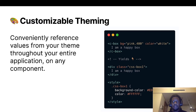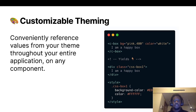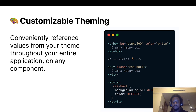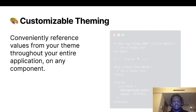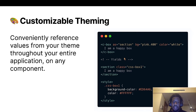Chakra UI also has a customizable theme with a really interesting theming API. It allows you to conveniently reference values from your theme object to style your components. On the right hand side, you can see a box component with a background color of pink 400 and a color of white, yielding a div by default. You can also change the underlying element by passing the polymorphic 'as' prop — you can provide a different tag name or even another component, and Chakra UI will render it for you.